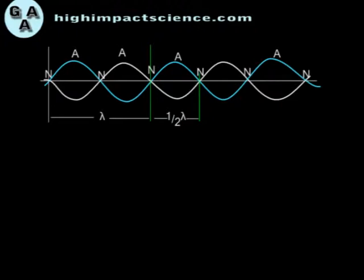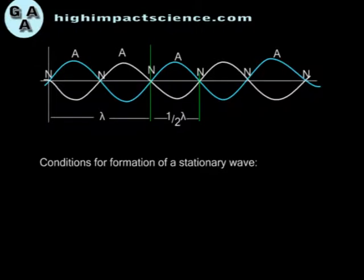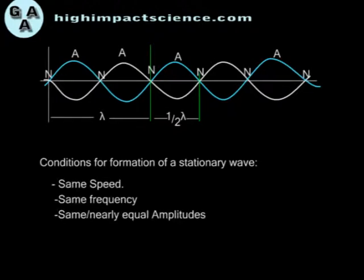For two progressive waves traveling in opposite directions to form a stationary wave, they must have the same speed, same frequency, and the same or nearly equal amplitude.